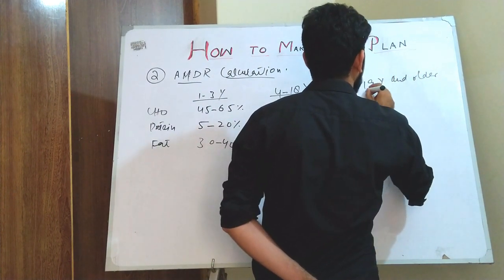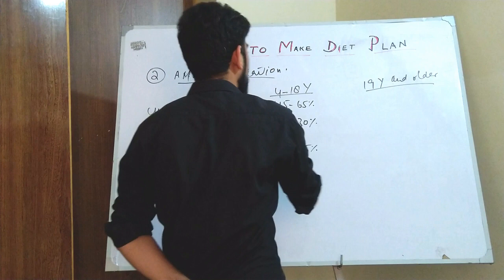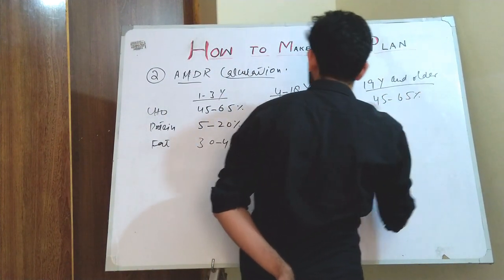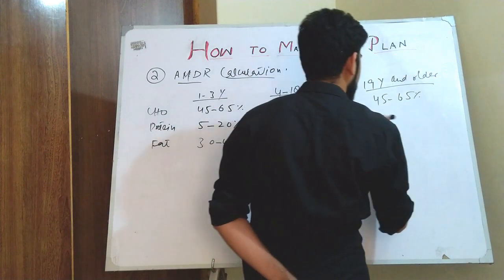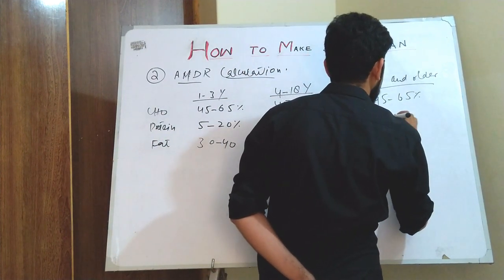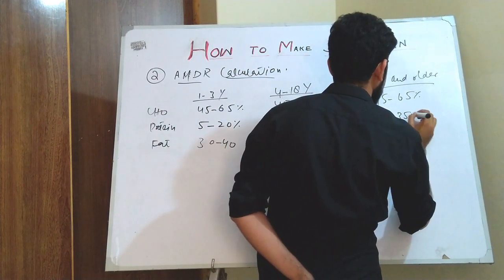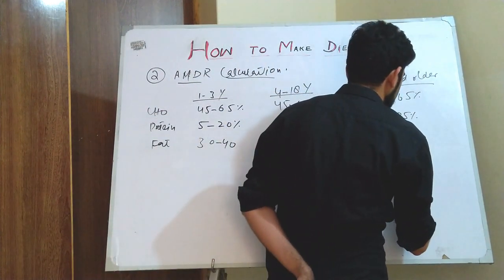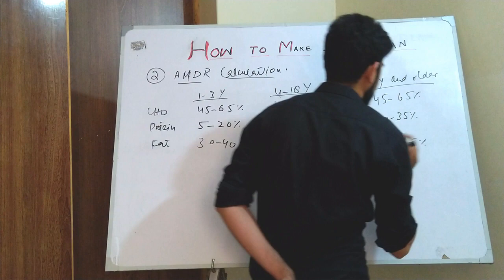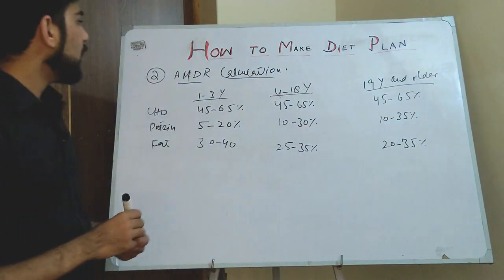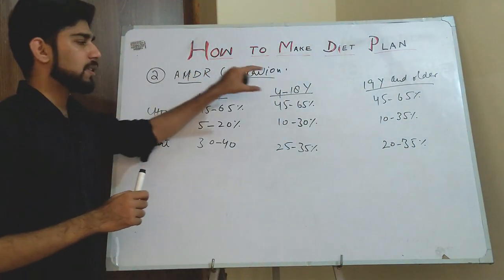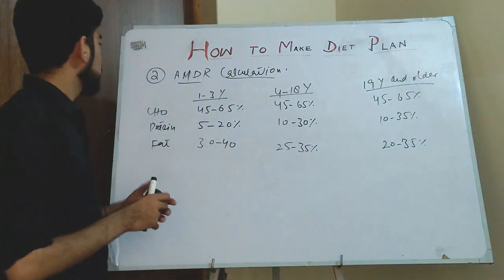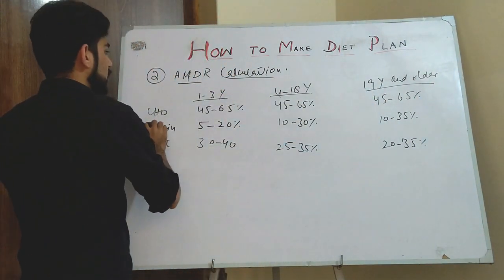For the age group 19 years and older, the AMDR for carbohydrate is again 45 to 65 percent, for protein it is 10 to 35 percent, and for fat it is 20 to 35 percent. While making a diet plan, we select AMDR from these normal ranges. Now let's start the AMDR calculation.